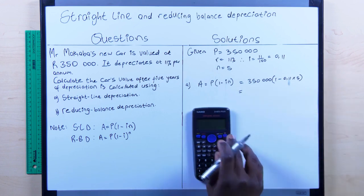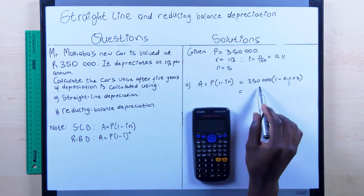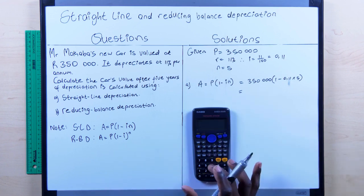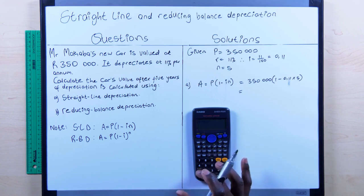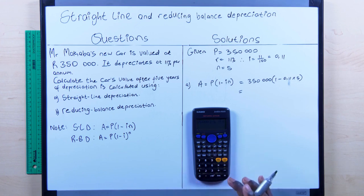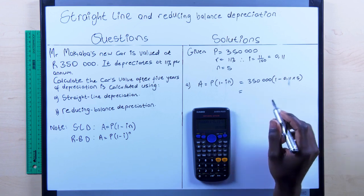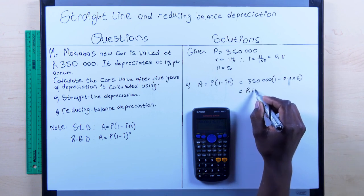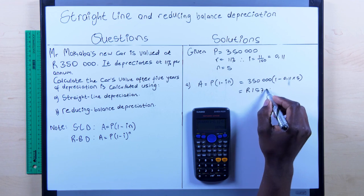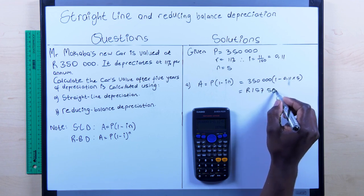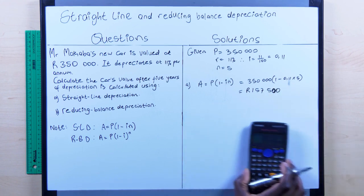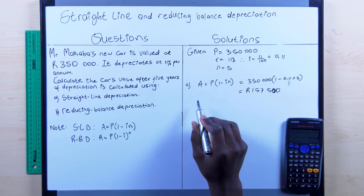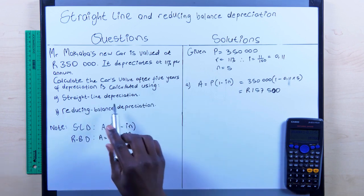Let's use our calculator and check. So, we expect the value we get here to be less than 350,000. That is so because the value is reducing, is depreciating. So now, the value of this car after 5 years would have dropped to be R157,500. So, that's the value of this car after 5 years. That's only when you've calculated the depreciation of the car using the straight line depreciation.